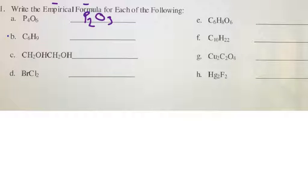For the next one, B, it's C6H9. The lowest common divisor will be three. So you will simply get C2H3 as your empirical formula.